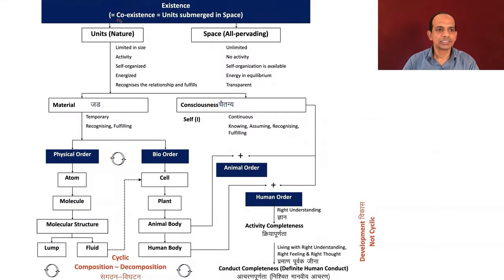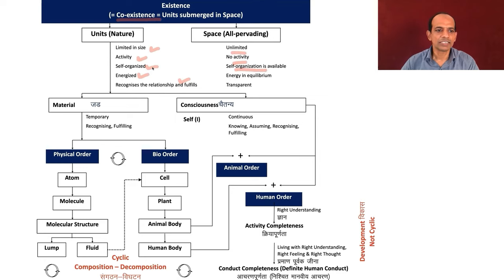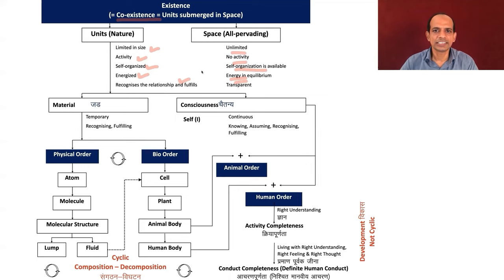How is all this happening in the existence? It is an expression of coexistence itself. The coexistence is expressing in the form of these four orders, which have definite innateness, natural characteristic, and inheritance. Existence is coexistence — units are submerged in space, all limited in size, activity in themselves, self-organized, energized and recognizing the relationship and fulfilling, being in space. While the space is unlimited and no activity, self-organization is available in space, and being in space every unit is self-organized. There is change in energy level in every unit in nature — be it the conscious unit or the material unit. But when you look at the space, it is energy in equilibrium; there is no change in energy. It is at the base of all these transformations in energy.